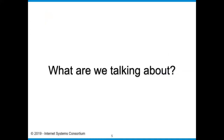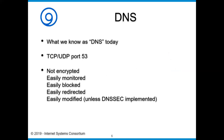What are we talking about? DNS today runs over TCP and UDP port 53. It's not encrypted — there's no protection of the privacy or visibility of the information inside DNS queries and responses. It's very easily monitored. Anybody on the data path from you to wherever the packet is going — from the recursive server up between the recursive and the authoritatives — is going to be able to see it. It's easy to monitor the information going through.